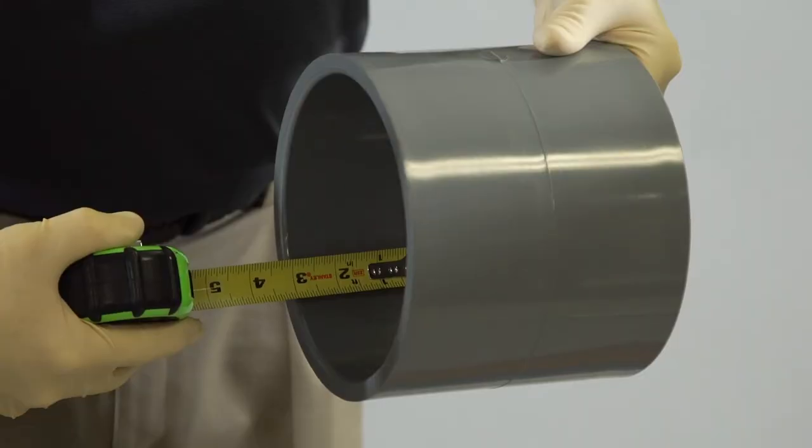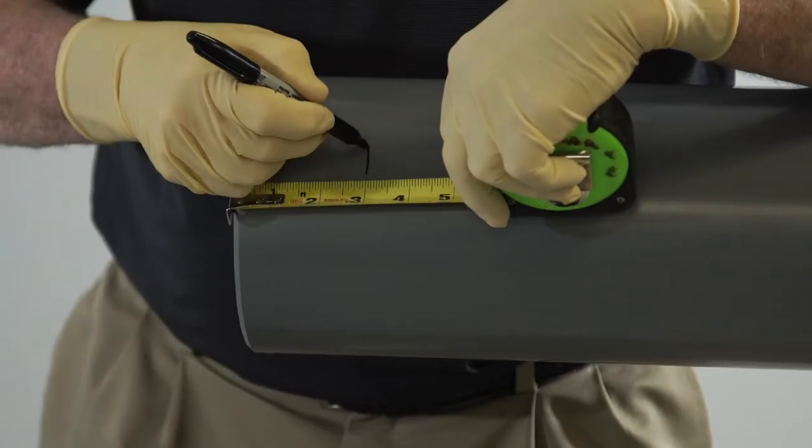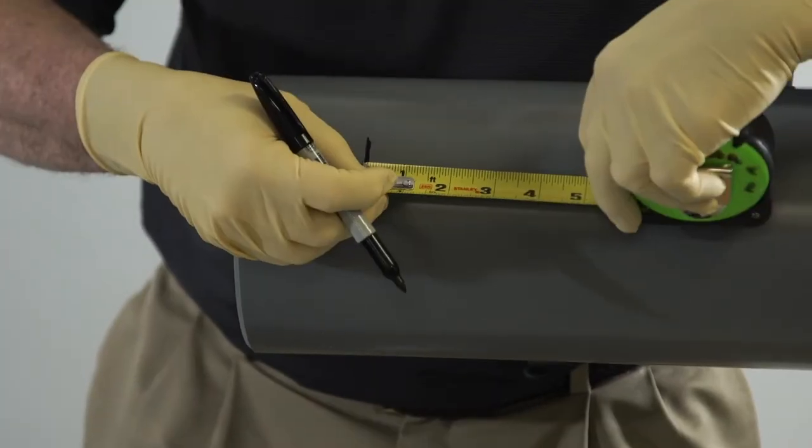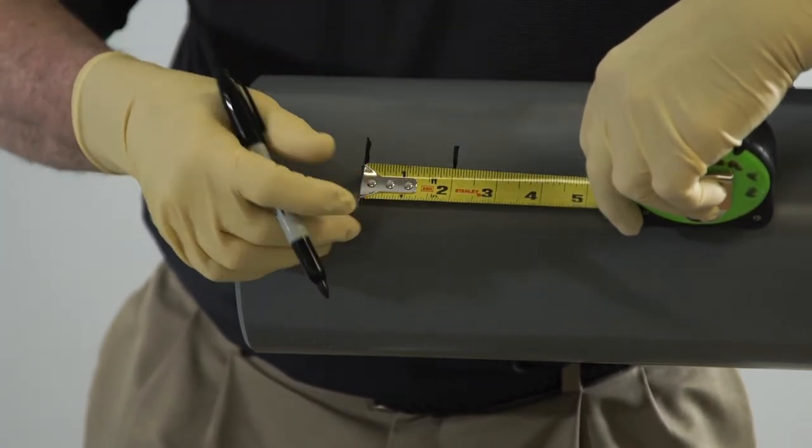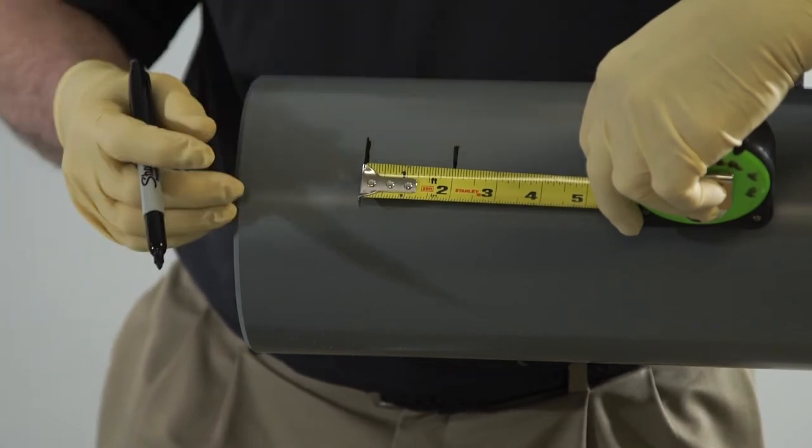Measure the fitting socket depth and mark the distance on the pipe OD. Add two inches to this distance and make a second mark on the pipe OD. The first mark should be covered during the application of both primer and solvent cement.